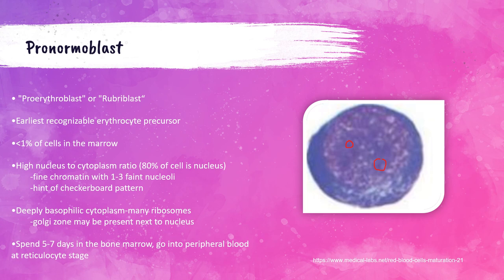These cells spend around five to seven days within the bone marrow, mature, and then go into the peripheral blood at the reticulocyte stage. They have a very deep blue cytoplasm without any granules. The cytoplasm appears very intensely blue. These are very large cells, up to 20 micrometers in size.